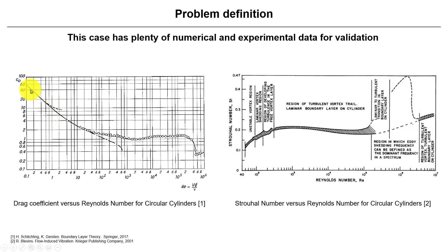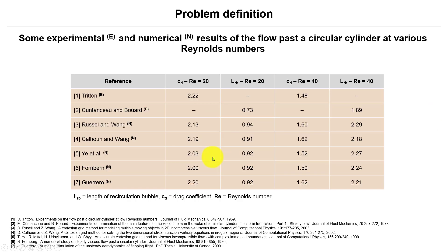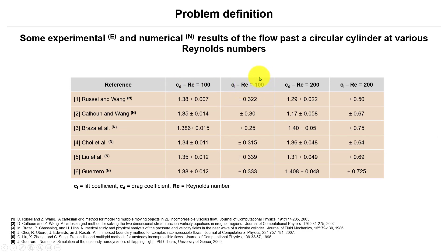You have probably come across this plot — the drag coefficient CD versus Reynolds number — there are many references for it. We also have the Strouhal number; usually you can average the Strouhal number to about 0.2. There are a lot of sources for validation. In the laminar steady region you measure CD and also the length of the recirculation bubble. Then you move to unsteady, laminar and turbulent regimes, and there are many, many references.